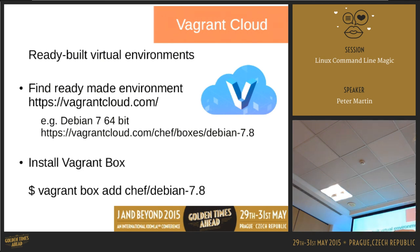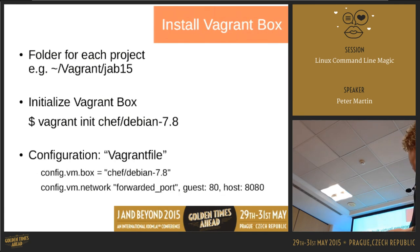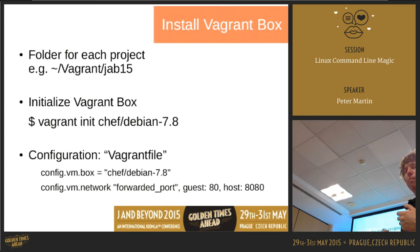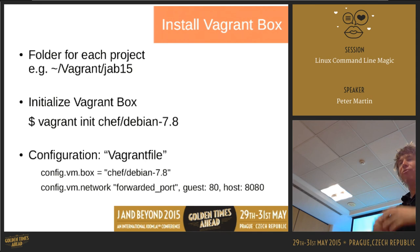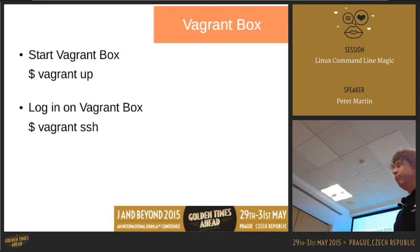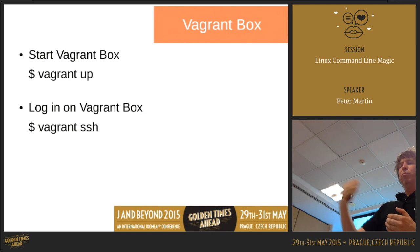You can install a box using 'vagrant box add', or just run 'vagrant init' and it will handle it. You may need to configure port forwarding in the Vagrantfile. To start your Vagrant box run 'vagrant up', and to log in just do 'vagrant ssh' — no password needed.